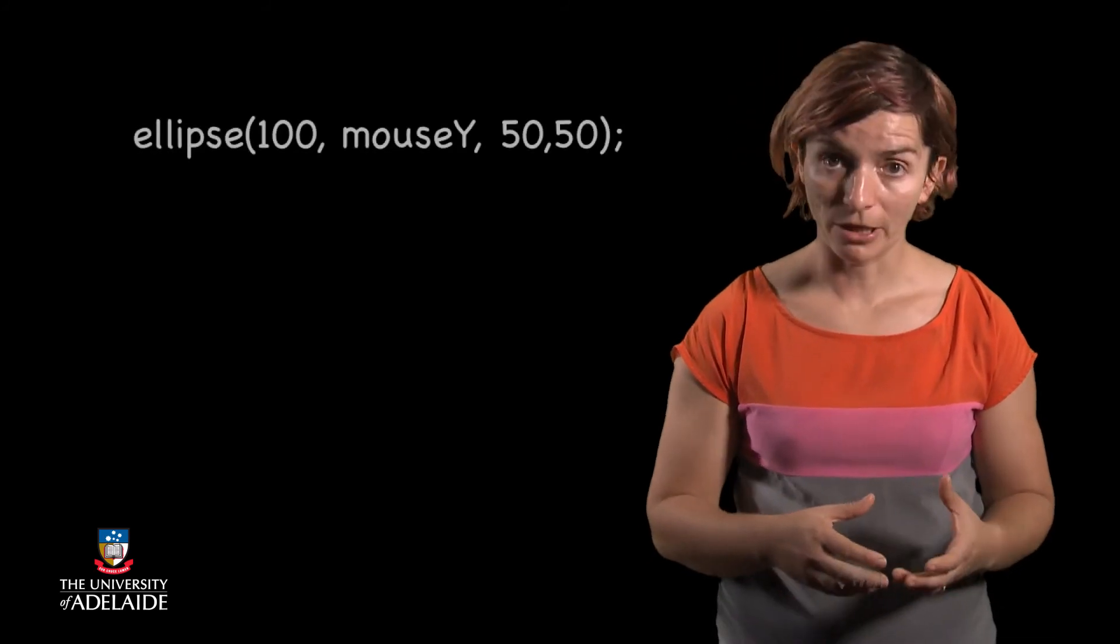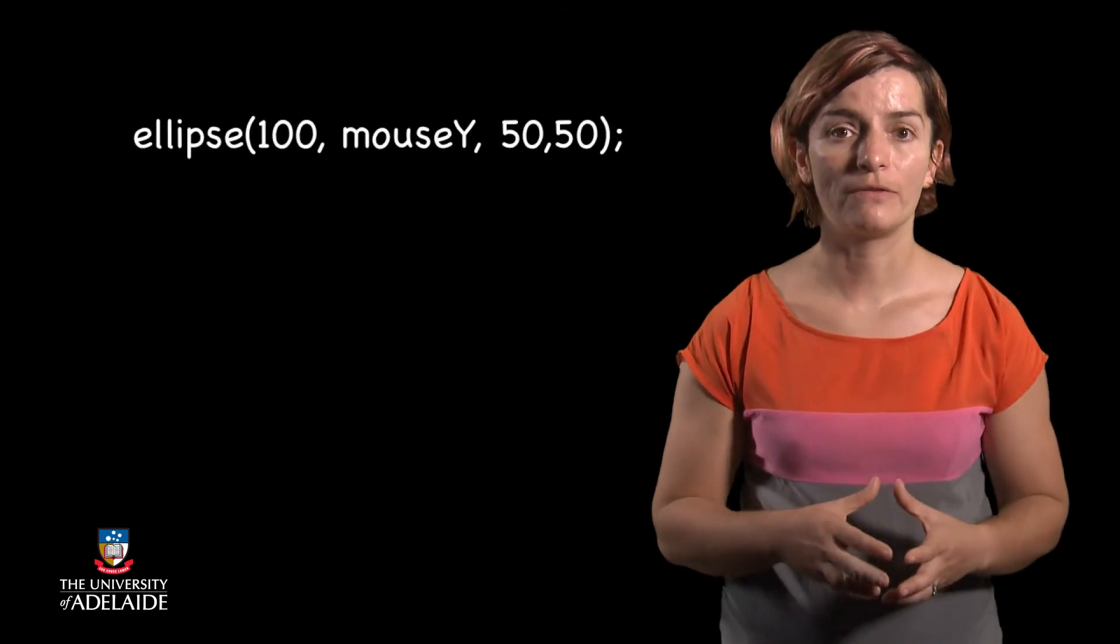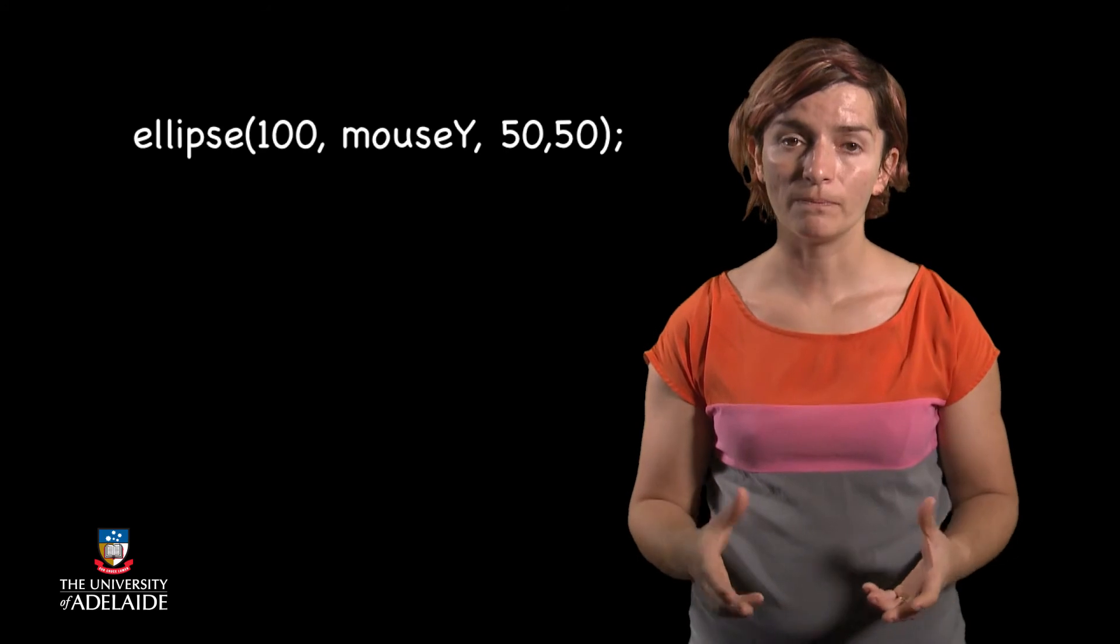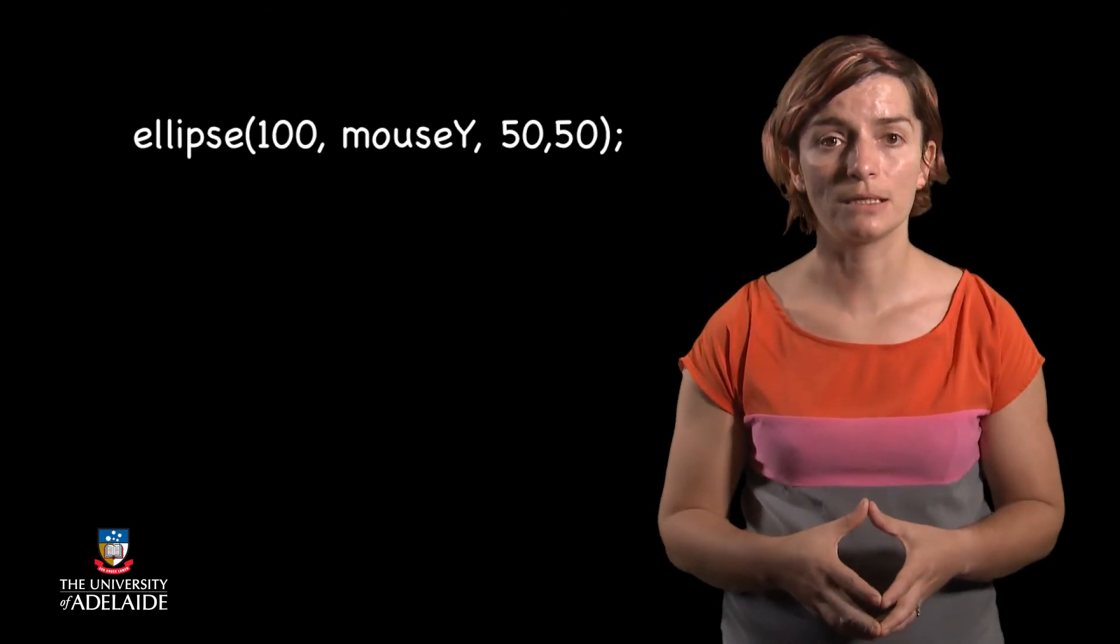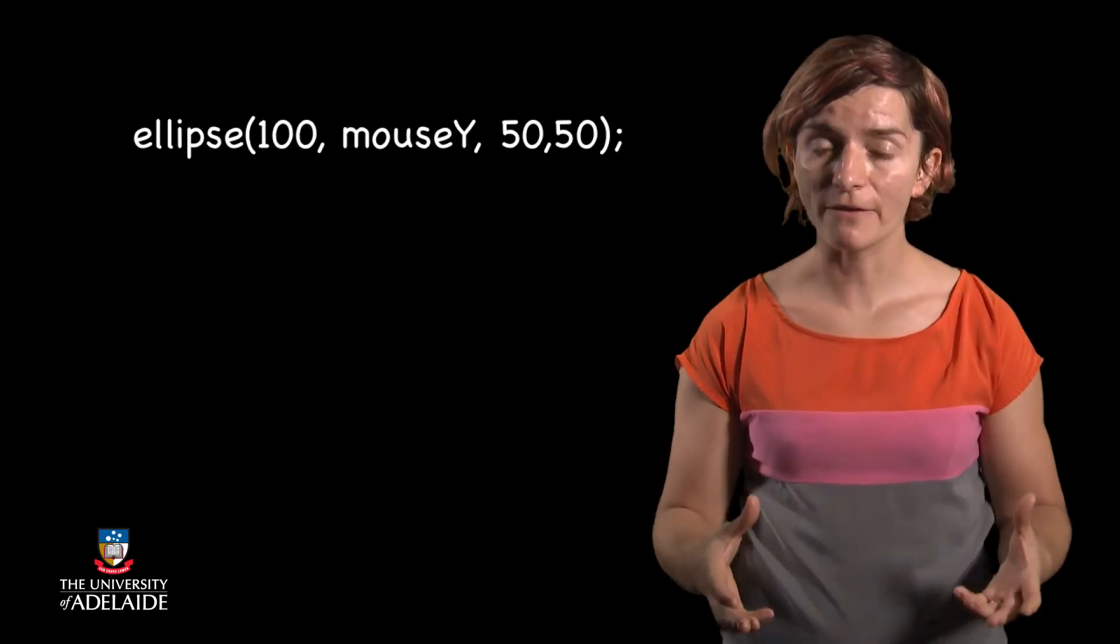Let's do the same thing as before, only this time we want the ellipse to follow the mouse if the mouse goes up and down, and not to follow it otherwise. Similarly, we set the x coordinate of the ellipse center to a constant value, and the y coordinate of the ellipse center to be mouseY. And we have something like this.